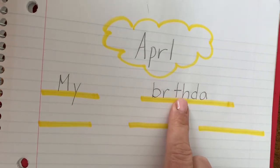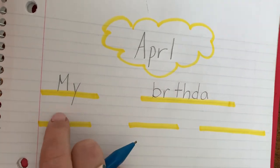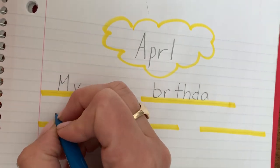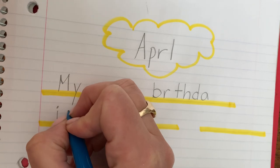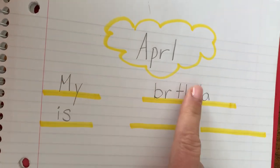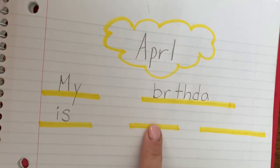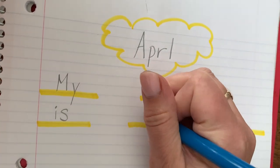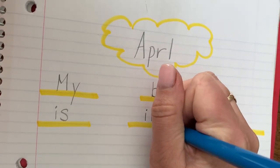My birthday is, we use that word yesterday and we're going to use it again today. Is. I. S. My birthday is in. We use that one yesterday too. In. Another I sight word in.